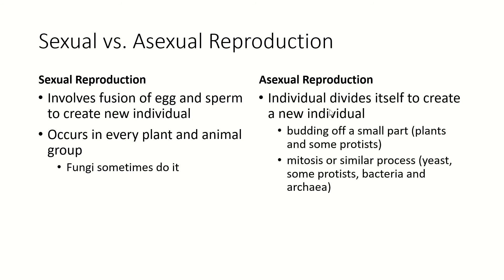Asexual reproduction is when an individual divides itself to create a new individual. This can be budding off a small plant — plants can send out a runner, which is a specialized stem that can then put down roots elsewhere and grow into a whole new plant. Some protists do this by pinching off a portion of their body, and that little pinched-off part can become a whole individual. Other protists can do mitosis and create a whole new individual by mitosis.